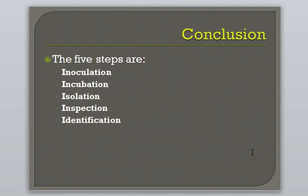In review, the five steps for culturing microbes in a lab are: Step 1, Inoculation — the process of introducing a microbe to a new environment. Step 2, Incubation — giving the microbe time to grow. Step 3, Isolation — the process of separating microbes from a mixed population. Step 4, Inspection — using both macroscopic and microscopic inspection methods. And finally, Step 5, Identification — achieved by gathering data from numerous assays to help determine the identity of the unknown microbes.